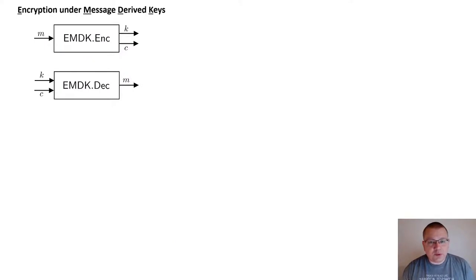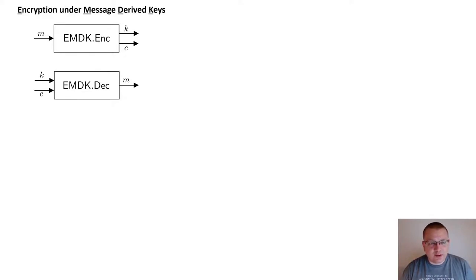Next, we define a new primitive called encryption under message-derived keys, or EMDK. This new primitive captures a special type of symmetric encryption. The encryption algorithm of an EMDK scheme generates a secret key that can depend on the plaintext message being encrypted. The decryption algorithm of an EMDK scheme uses the standard syntax of symmetric encryption schemes.